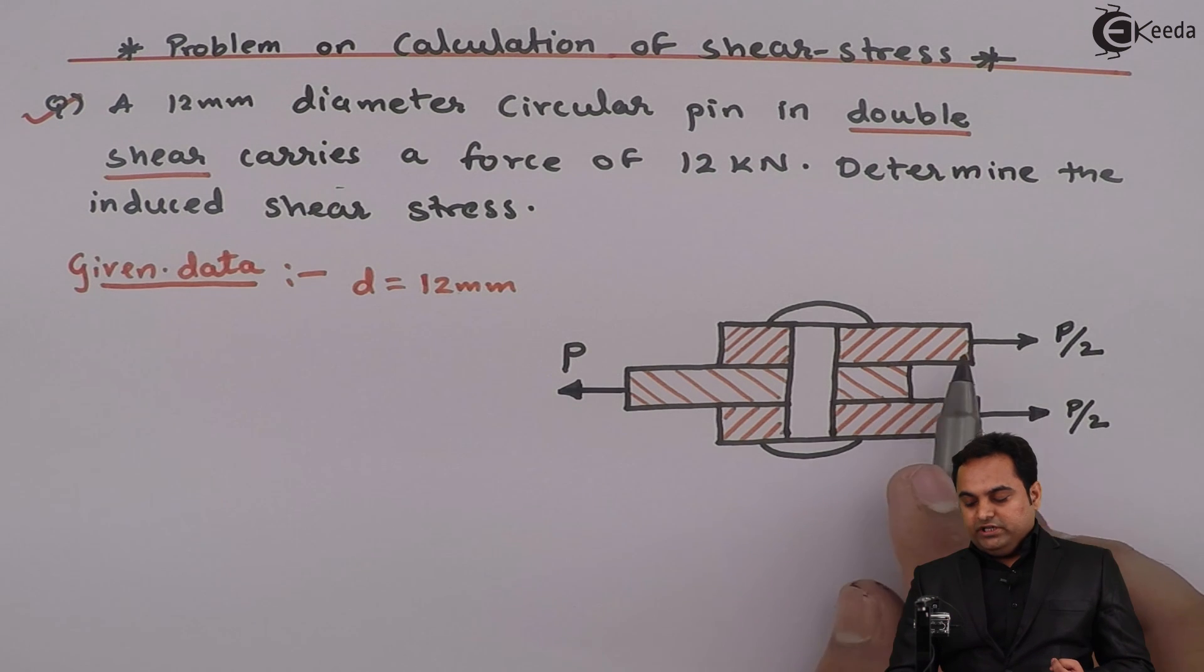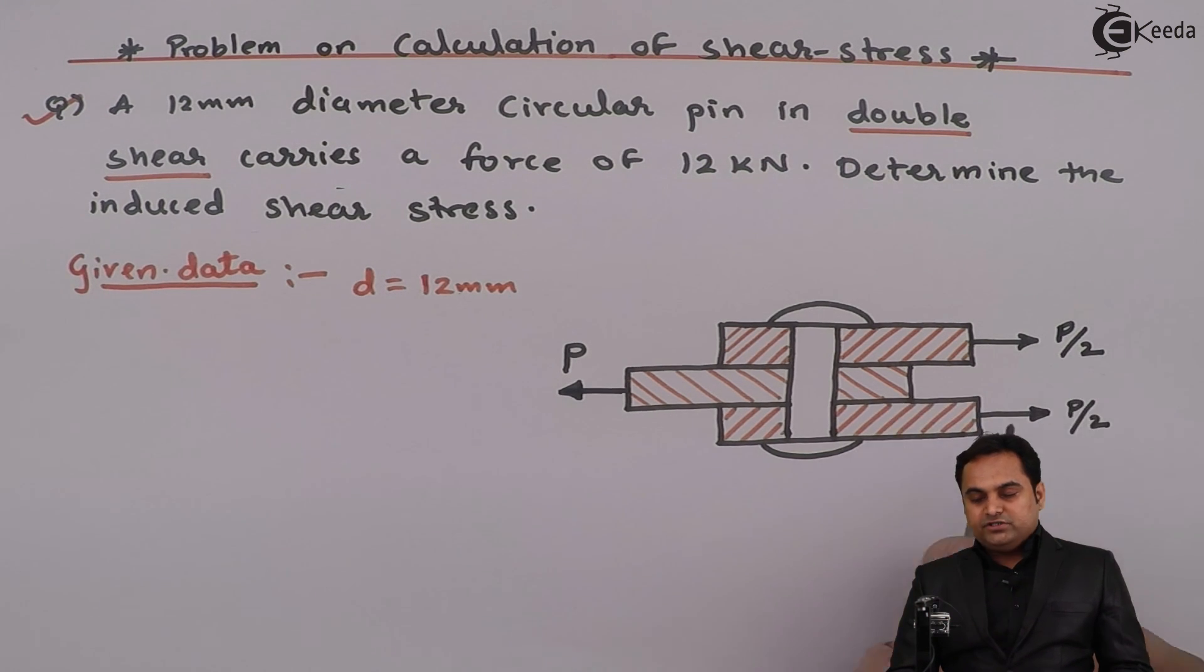So they are trying to pull the plate towards right. Because of these two unequal directions, what can happen?